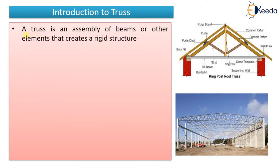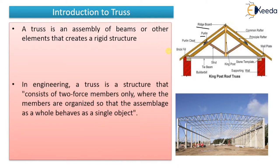What is a truss? A truss is an assembly of beams and other elements that creates a rigid structure. We connect these various members — the ridge board, the purlin, the purlin cleat, the principal rafter, and so many members. After connecting them all together, it will act as a rigid structure. That assembly is nothing but your truss.